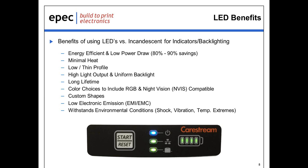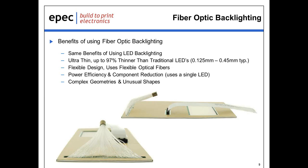Another backlighting solution we use here at Epic is fiber optic backlighting. The benefits are very similar to LED technology. We can actually achieve much thinner designs — down to 125 thousandths of a mil with fiber optic backlighting. These are very flexible designs that can contour just like our flex circuits. They're more power-efficient, and they reduce the number of components on the board by using a single LED instead of various LEDs across the assembly. They can also meet complex geometries and unusual shapes.